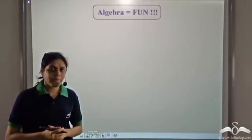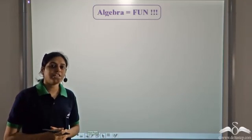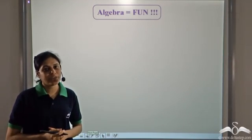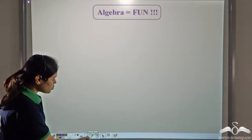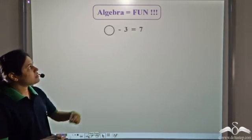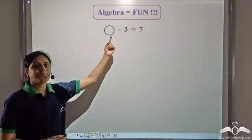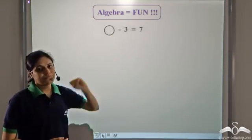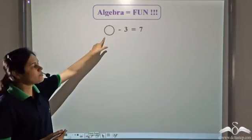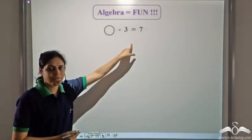Do you like solving puzzles? Well, algebra is just like solving yet another puzzle. So look at this puzzle. What should be there in place of this circle? Simple enough, it should be ten. Ten minus three gives us seven.